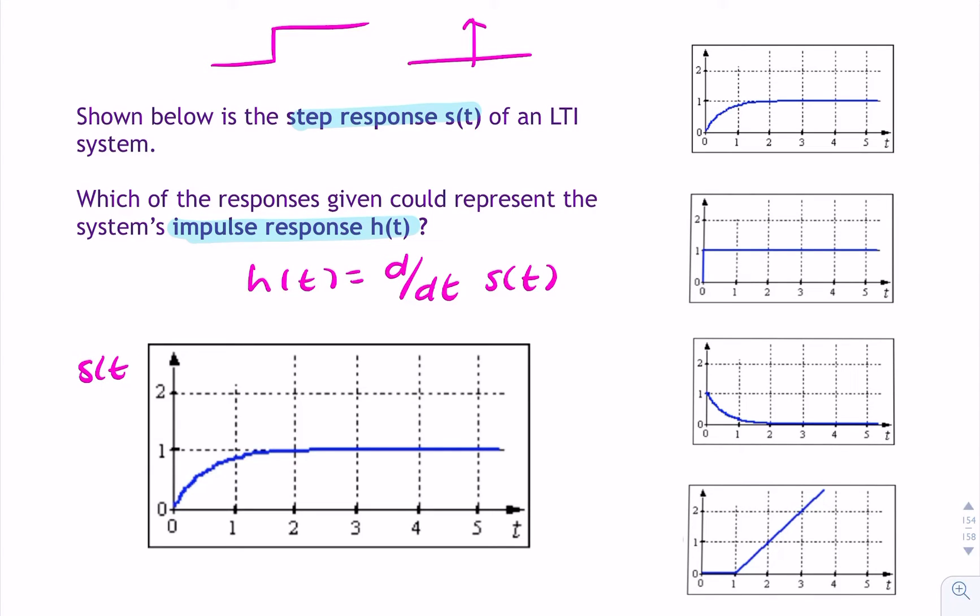So if this is s(t), what we're looking for is the gradient of this. So just looking at it, the gradient is positive and seems to decrease until it becomes 0.